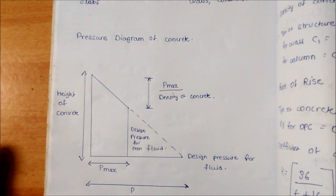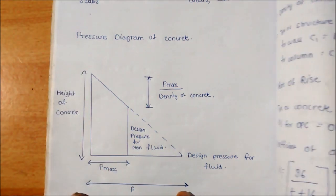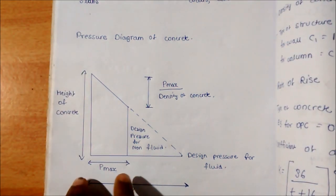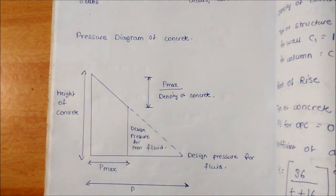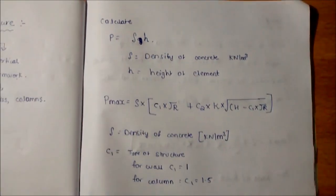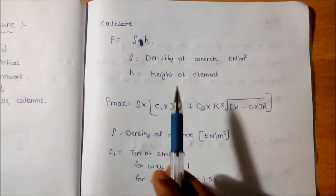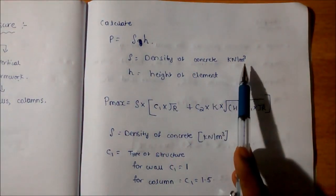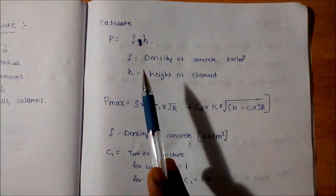This pressure P, we have a formula: density into height of the element gives the pressure P. To determine the P max pressure, we have the CIRIA formula. The formula comes like: rho into G, the density of concrete in kilonewton per meter cube, and height of element in meters.